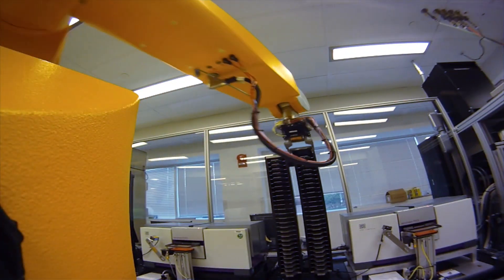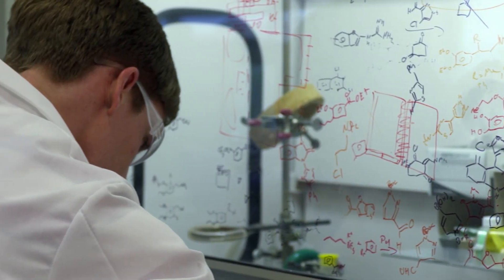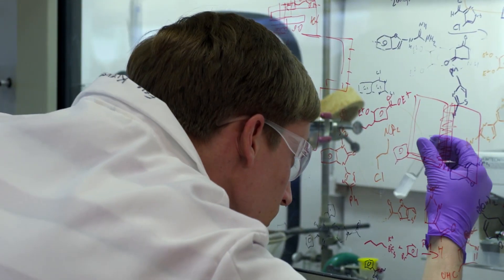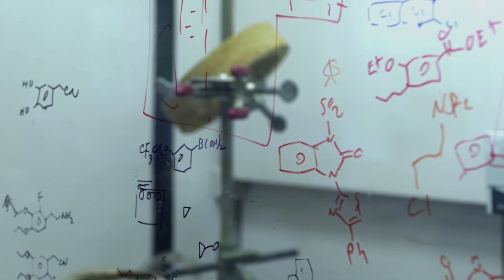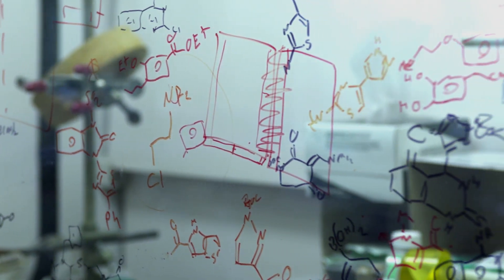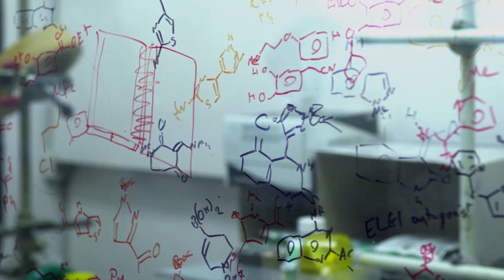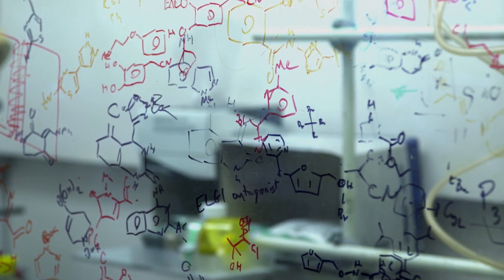Though the NCATS robotic systems test hundreds of thousands of compounds, the many properties a compound must have for it to be used as a probe or drug are virtually never found in hits from a screen. Rather, hundreds or even thousands of chemical modifications of these hits must be made to identify a molecule that delivers the maximum effect at the lowest dose with the fewest side effects.